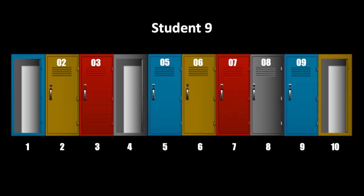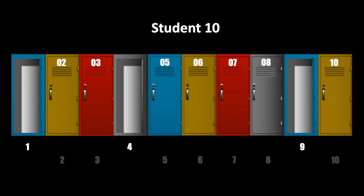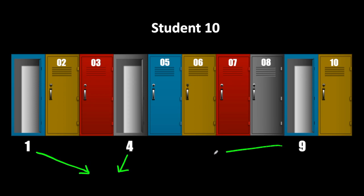We can repeat this process for students 5 to 10, and we notice at the end that there are three lockers left open: 1, 4, and 9. Now what is special about these three numbers?